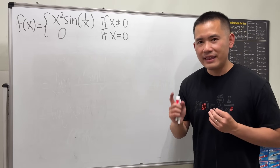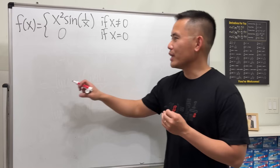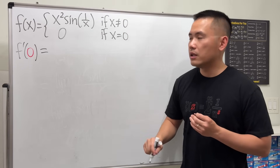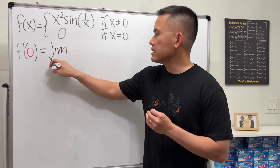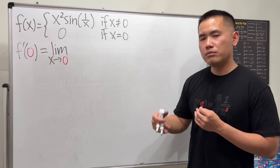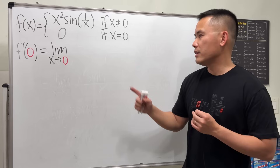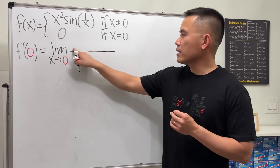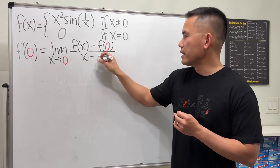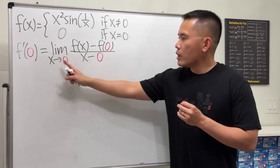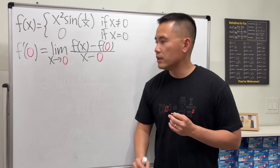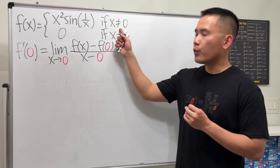To show this we actually have to go back to the fundamental definition of the derivative. To get f prime of zero, we have two versions of the limit definition. I'm going to use the limit as x approaching this number — you can also use the one with h approaching zero. I'll write down the definition: we have f of x minus f of zero over x minus zero.